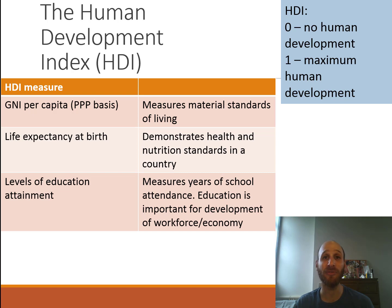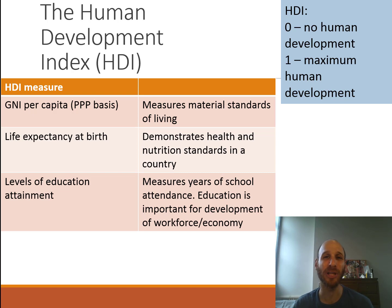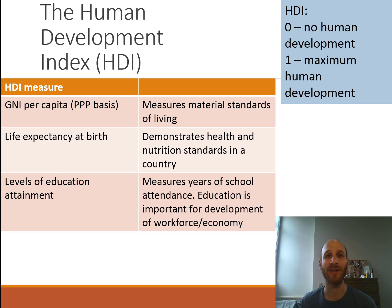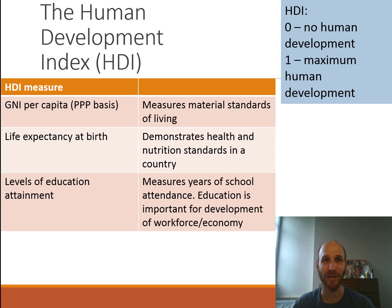The final element of the HDI is levels of education attainment. This measures how much education people generally receive in a country — how many years of schooling do they attend? The point of this is that education is crucial in terms of upskilling a workforce, creating a workforce that is able to be productive, able to do jobs, and able to increase GDP. All of these measures are part of how economists measure economic development in a country.